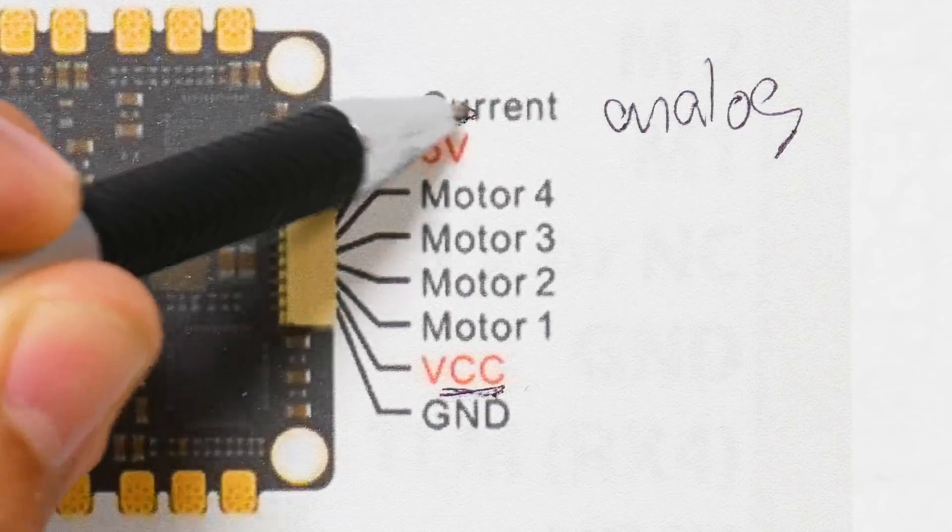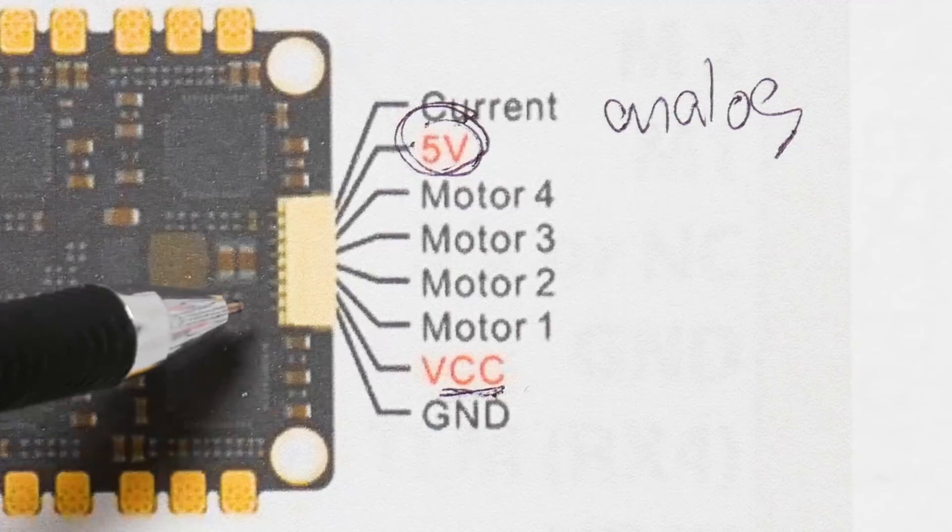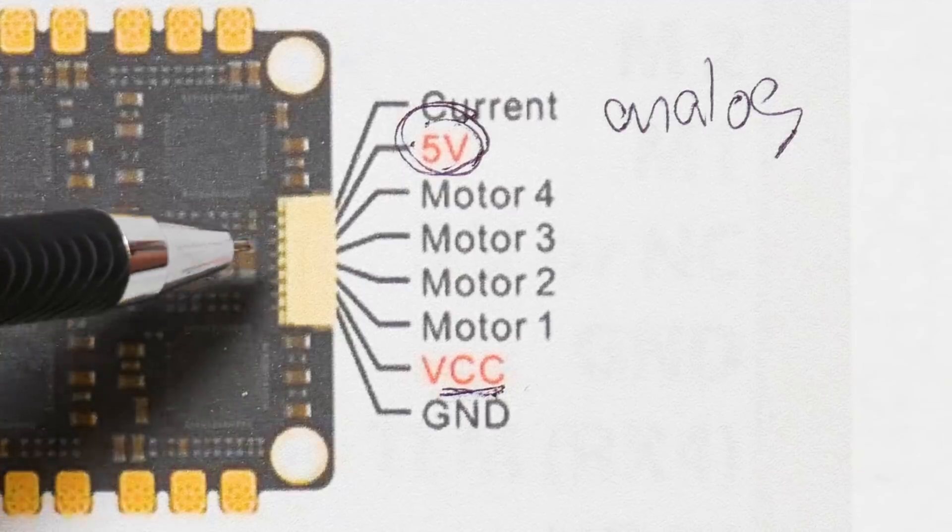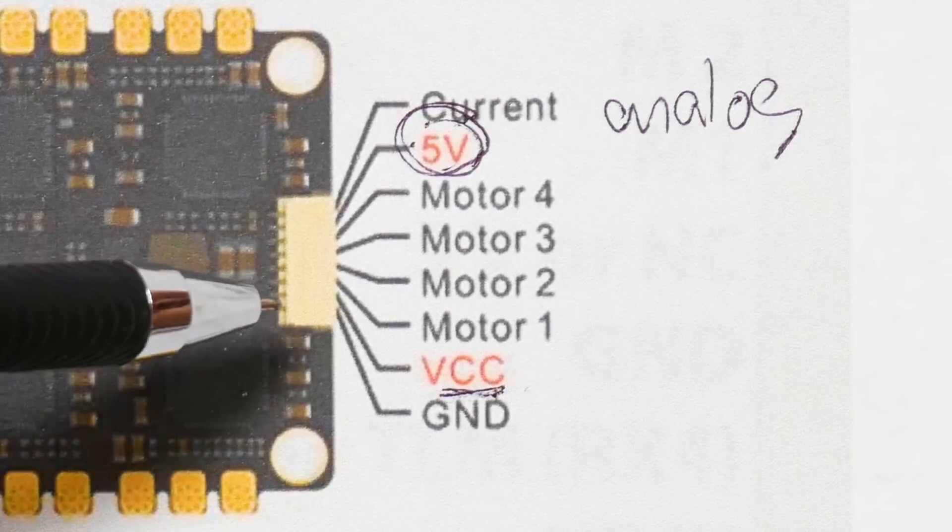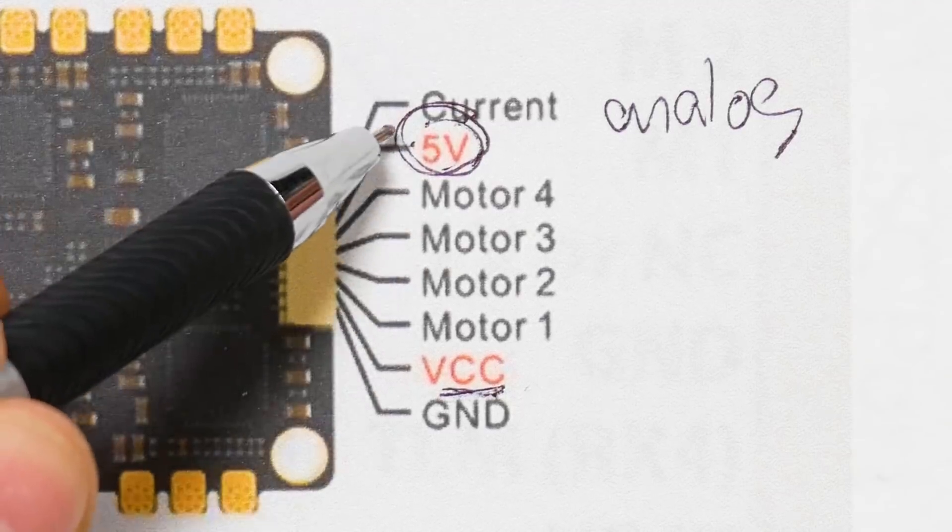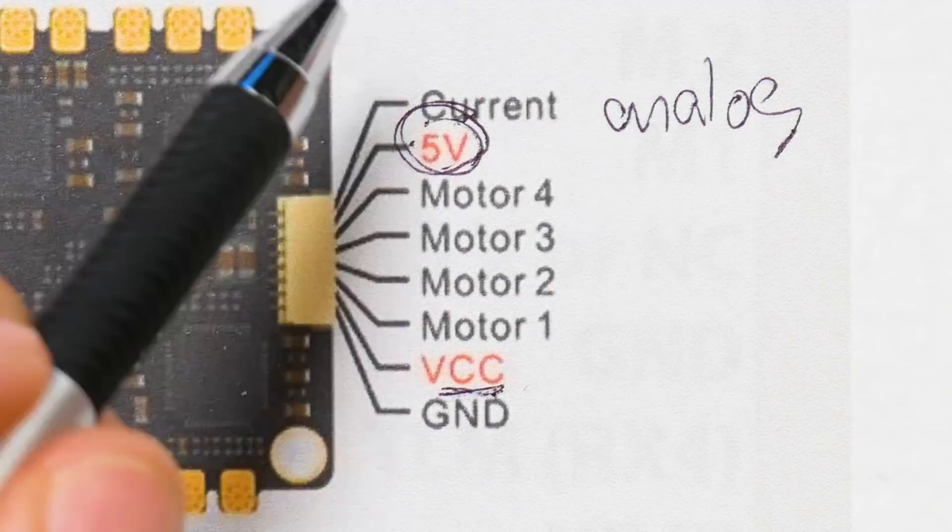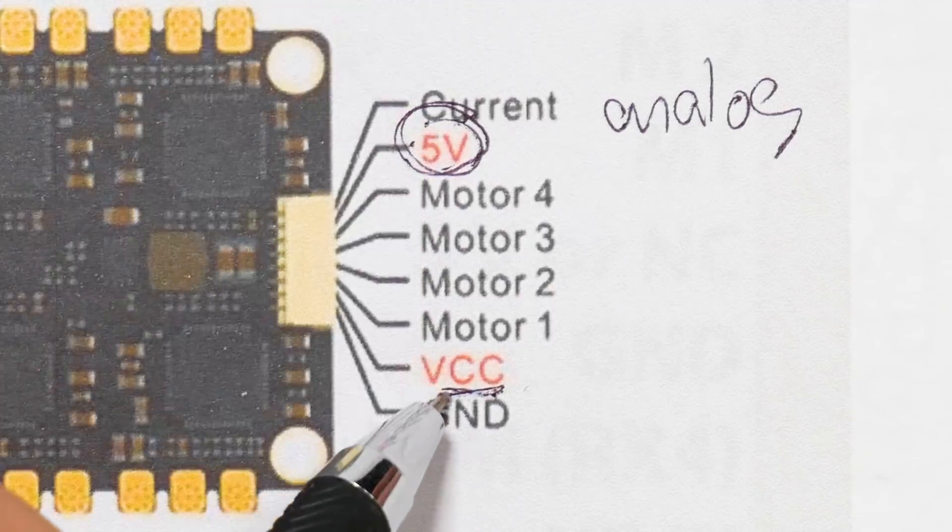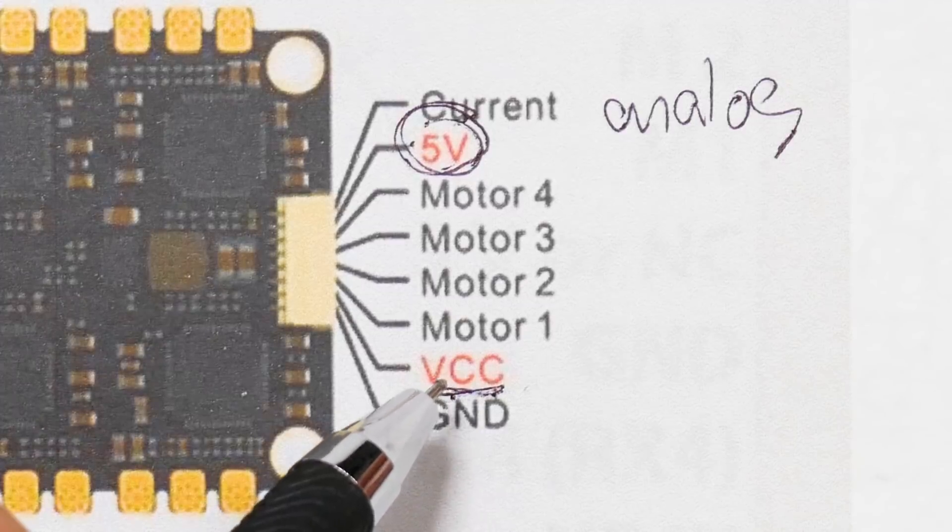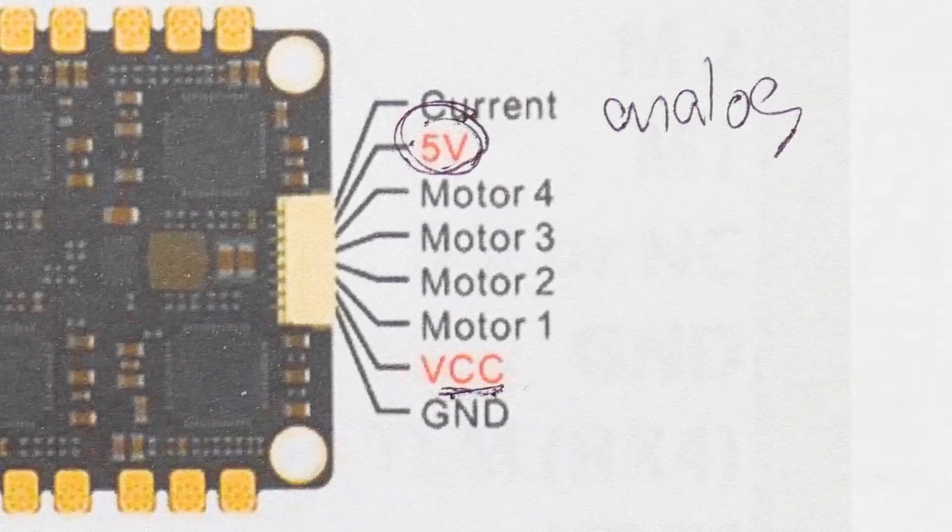Why might we want to send 5 volts instead of VCC from the ESC? One answer to that might be if the onboard regulator of the ESC has a higher amp rating. We might benefit from giving the flight controller 5 volts from the ESC because the regulator has a higher power output. But I think what we're going to do is we're going to leave 5 volts off. We're going to send VCC from the ESC and let the onboard regulator of the Heliospring do the powering. And we're going to have analog current sense, but not ESC telemetry.